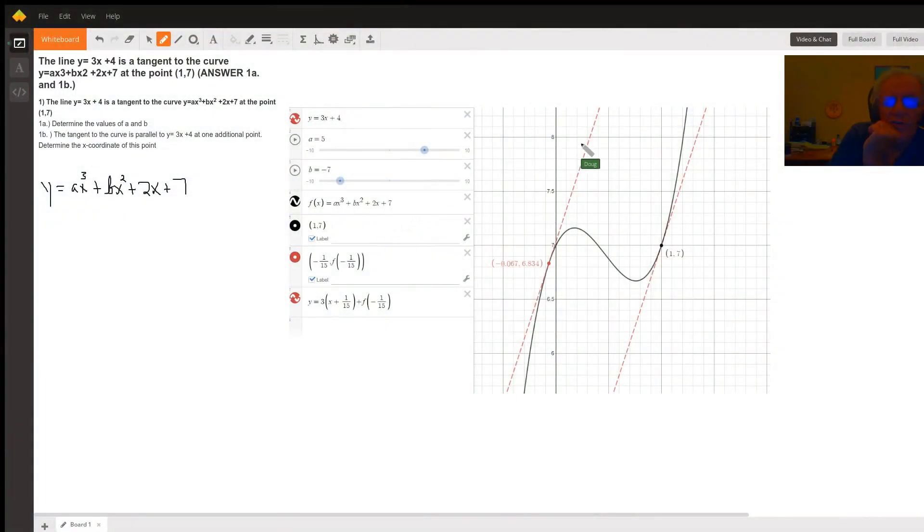This picture over here just kind of confirms what the problem is asking you to solve for. This graph right here, the black line or curve, is the graph of this function right here where a and b have already been determined.